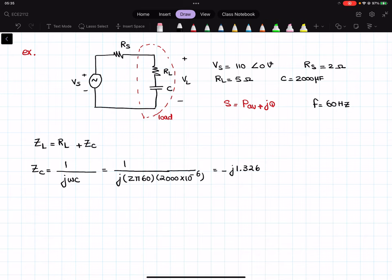Now, this is my ZC, so if I substitute in the above equation, RL was 5. So that would be 5 minus j1.326. And if I take this to the phasor domain, I'm going to get 5.173 with the angle of negative 0.259. So here, I found the impedance of my load.